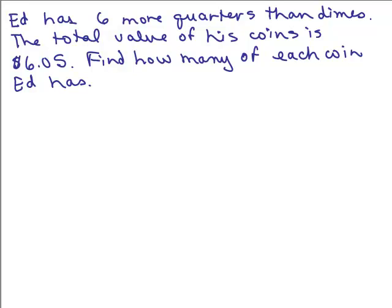This is a coin problem. Ed has 6 more quarters than dimes. The total value of his coins is $6.05. Find out how many of each coin Ed has. Well, of course, you could guess, right? You can say, what if I had 6 more quarters than dimes. So let's say I've got 10 dimes, and let's say I had then 16 quarters, and you could just see how much each of these is worth.